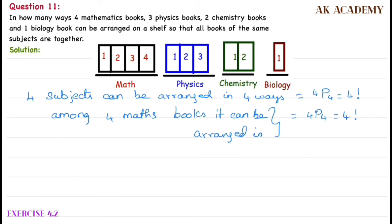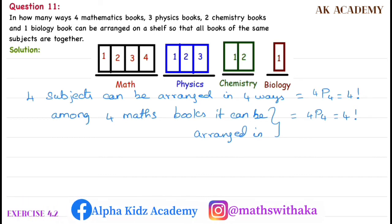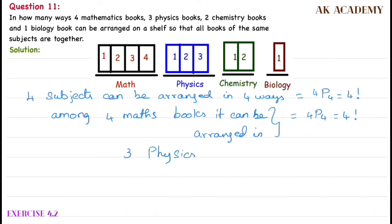Physics books - physics book is 3. 3 physics books, so 3 books are arranged in 3 factorial ways.